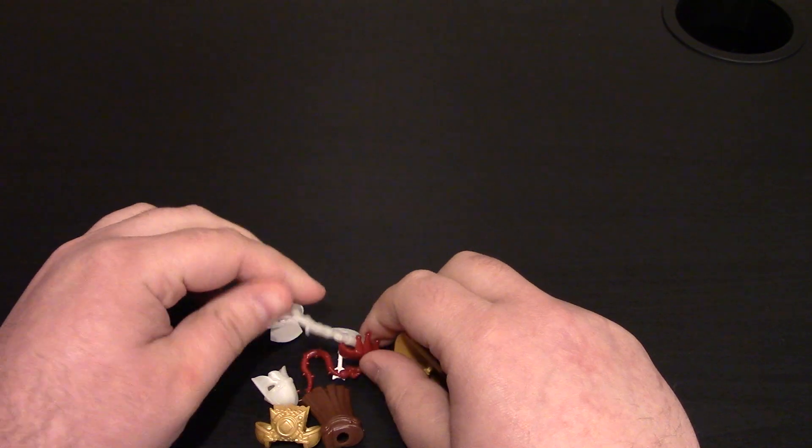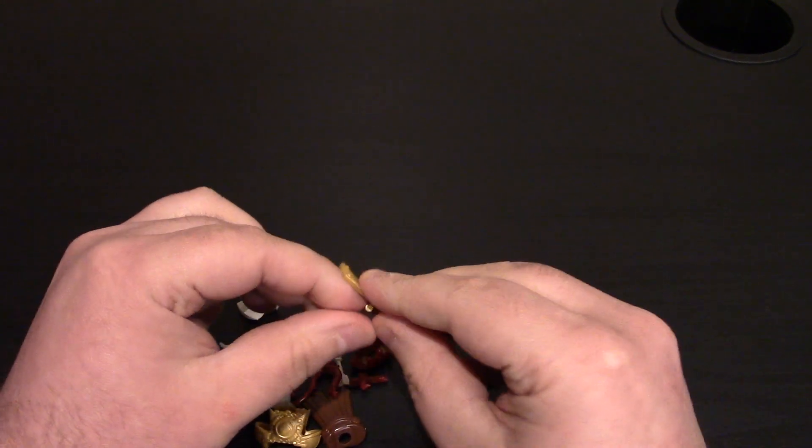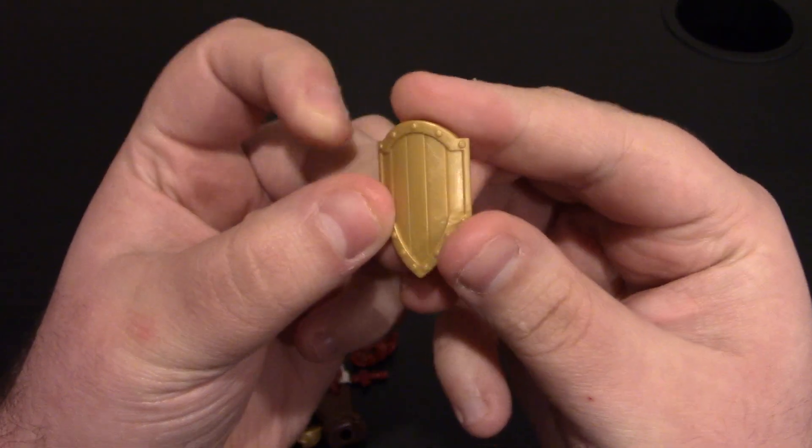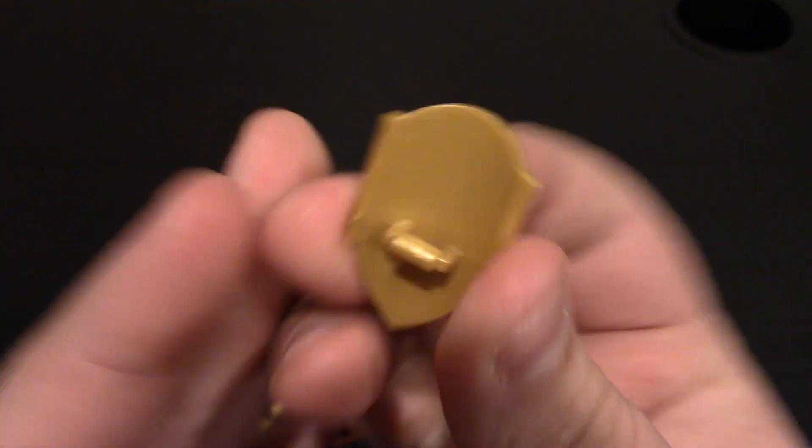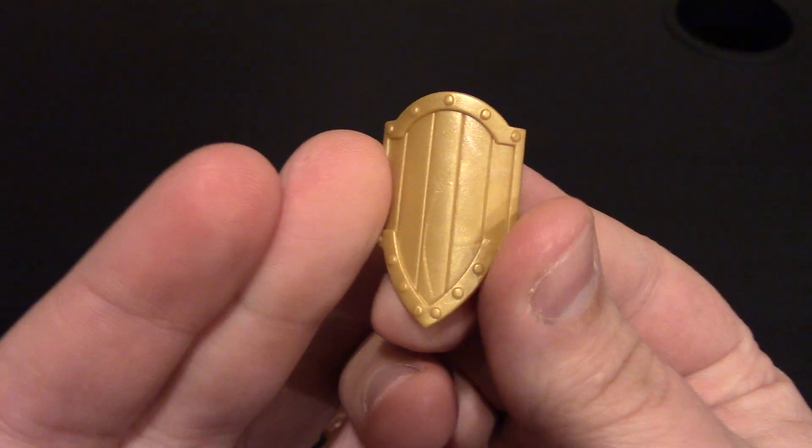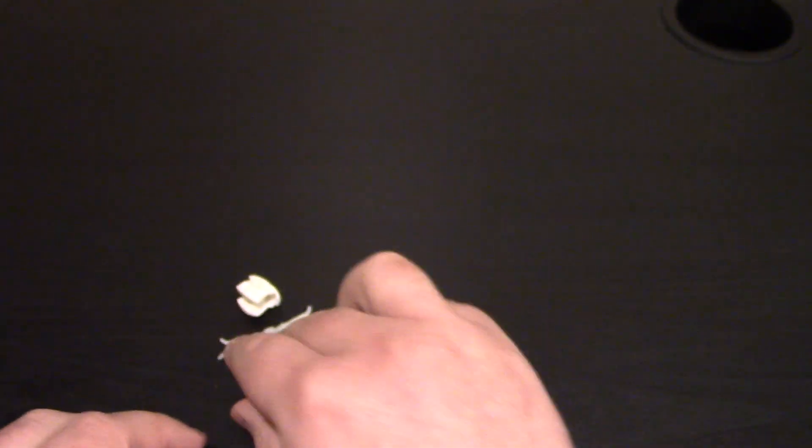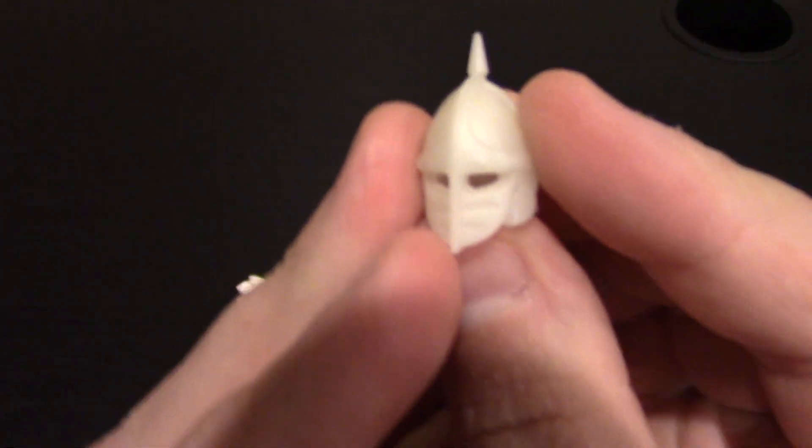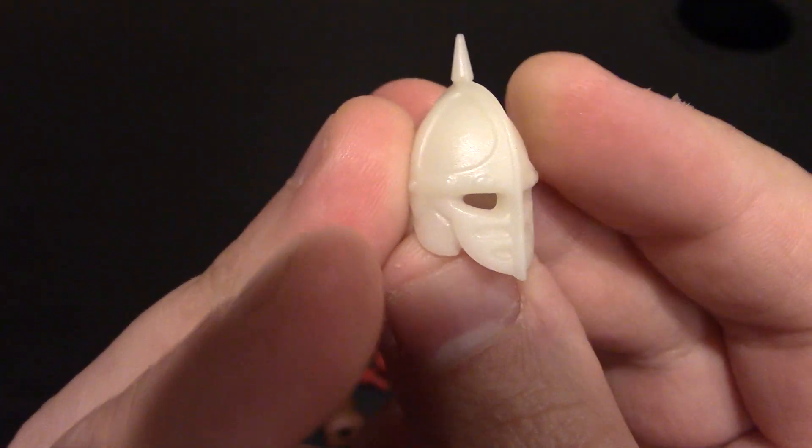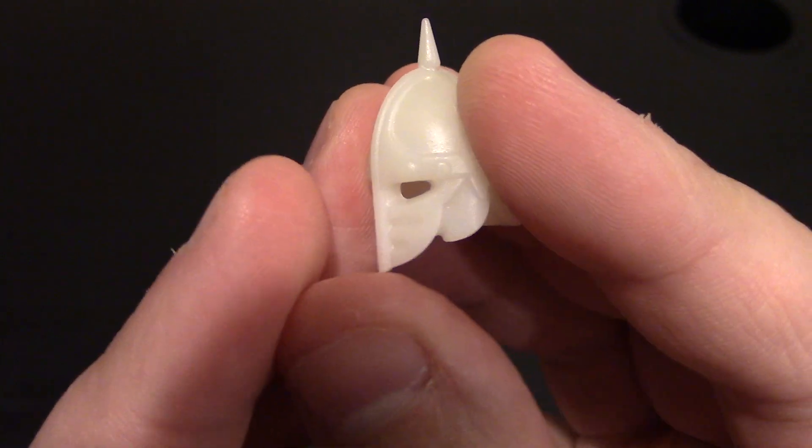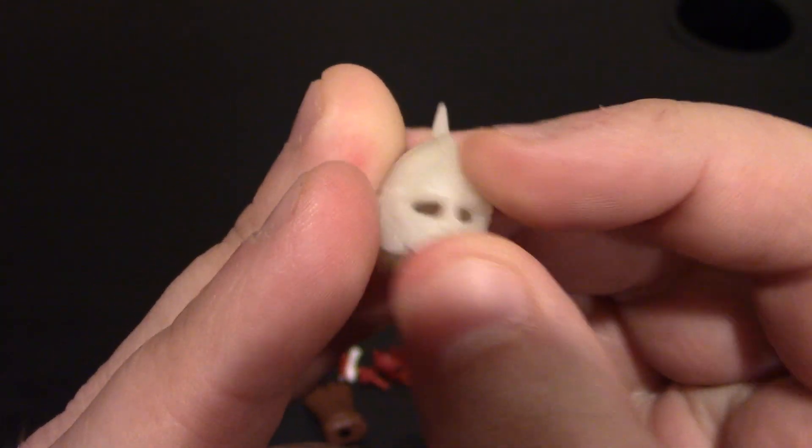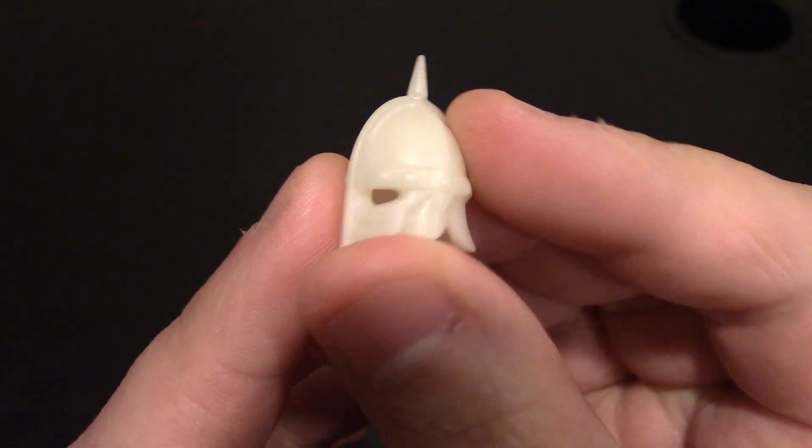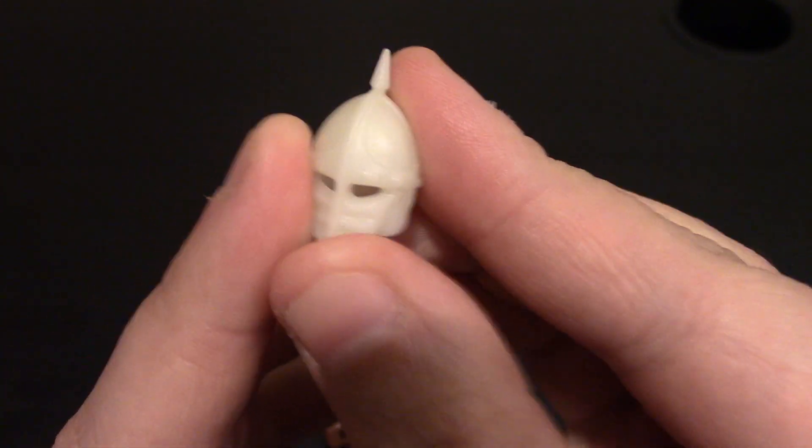We've got some helmets, armor, some accessories. We have a shield. I do like the shield. It's a big gold one. We have a cool gladiator or knight helmet here in glow in the dark. Nice little spike on the top, kind of like a Templar helmet.